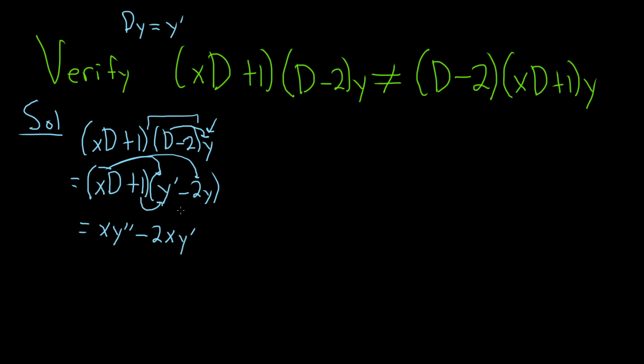Now we'll take the one and distribute. So it'll be plus y prime. And distribute again, minus 2y. It's really important to be really careful when you're first working with this stuff. It's really easy to mess up, super easy to mess up.